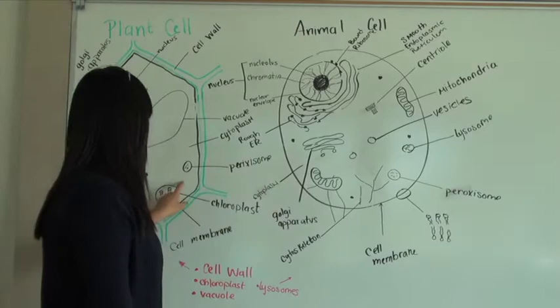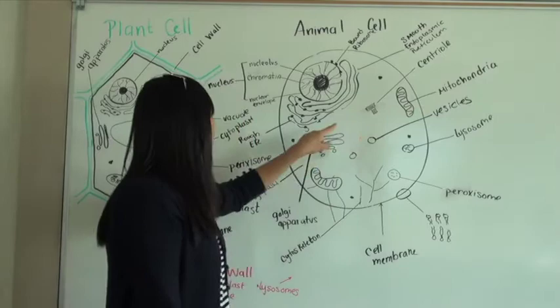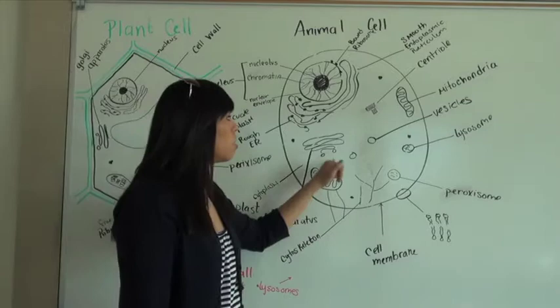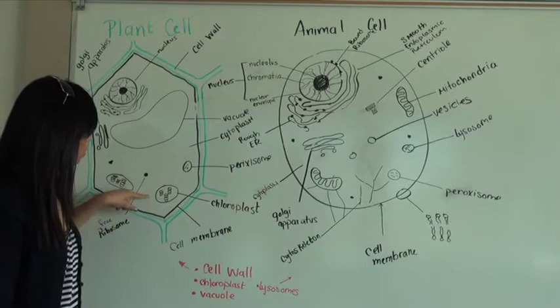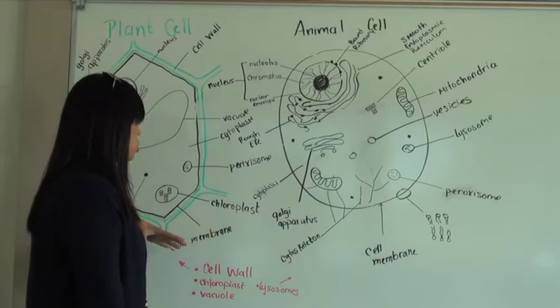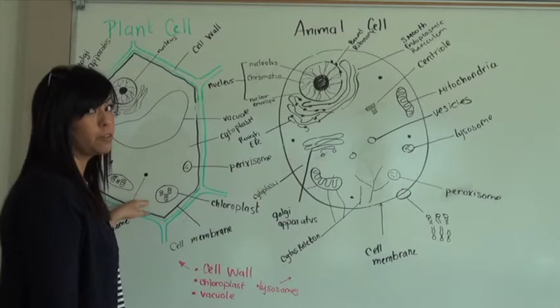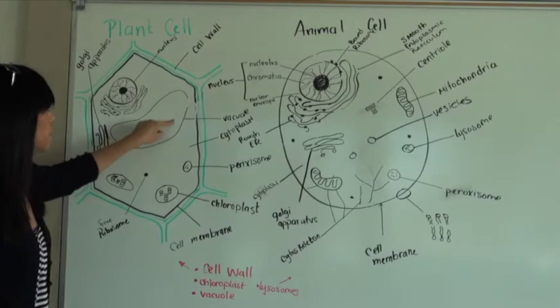Another big difference is the mitochondria versus the chloroplast. These are both powerhouses of the cell. In plant cells, mitochondria are quite rare, they're a lot more common in animal cells. What plant cells have is these organelles called chloroplast. Chloroplast convert solar energy into food glucose. This is the site for photosynthesis.